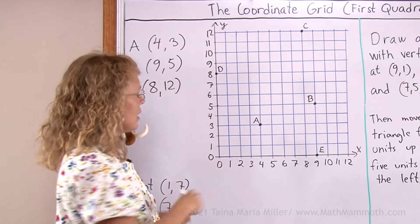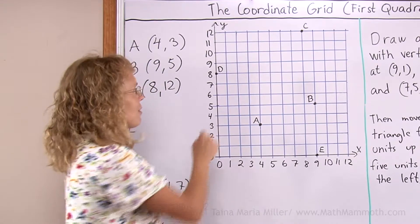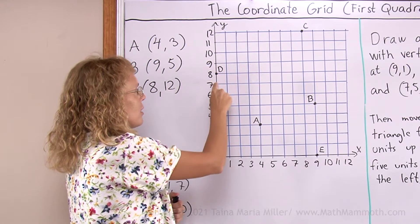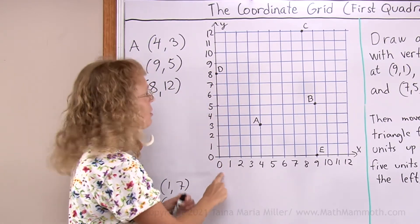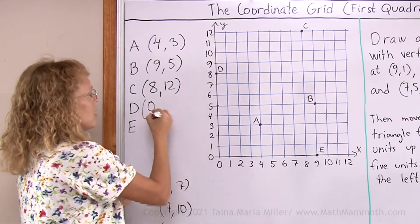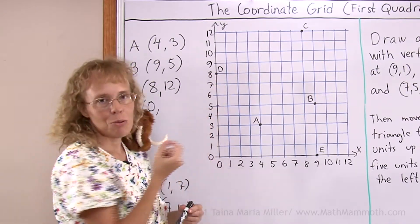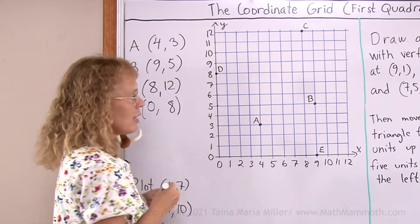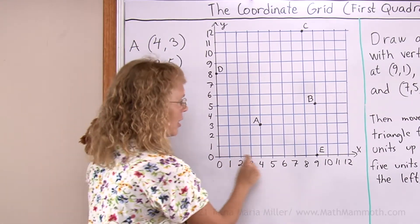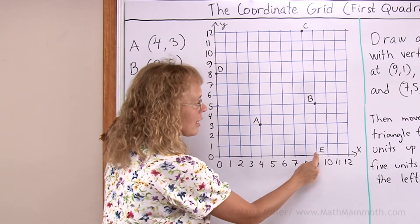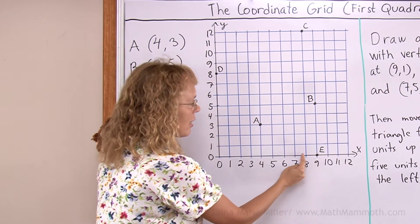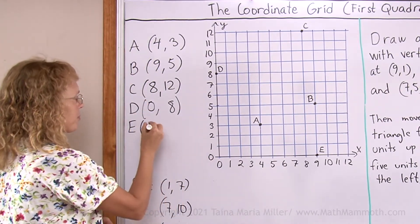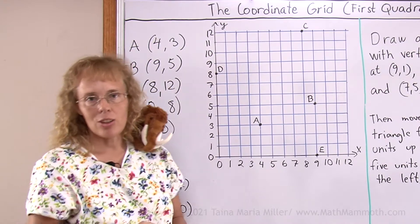Point D is actually on the y-axis itself. I use the same idea. Point D's x-coordinate is 0, and the y-coordinate since it is already on the y-axis is right there, is 8. And point E is on the x-axis. It is 9 this way and then I look here for the y-coordinate which is 0. So that is how you can find the coordinates of these points.